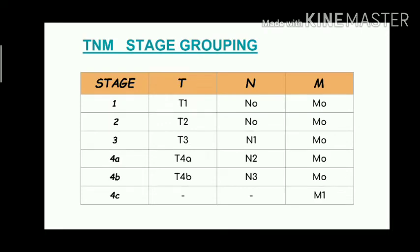Next, the TNM stage grouping of laryngeal carcinoma. The stages are stage 1, 2, 3, 4A, 4B, and 4C. T corresponds as T1, T2, T3, T4A, and T4B respectively. For N: stages 1 and 2 are N0; stage 3 is N1; stage 4A is N2; stage 4B is N3.